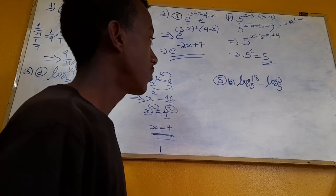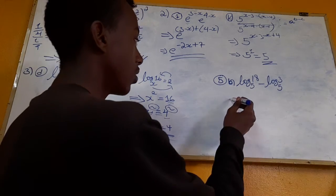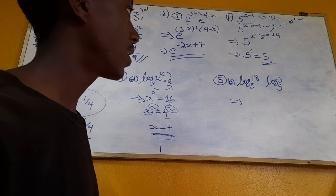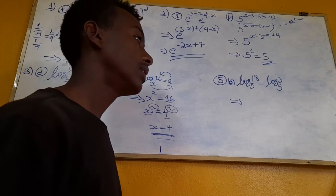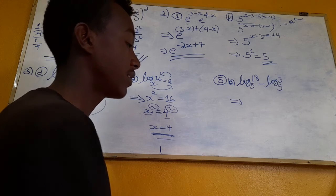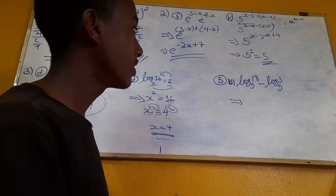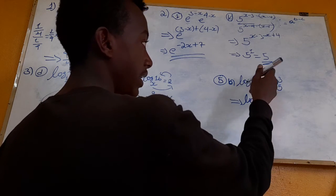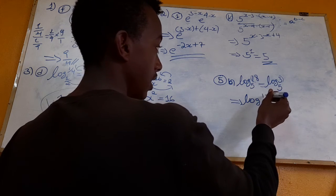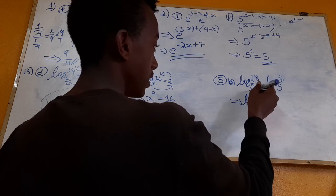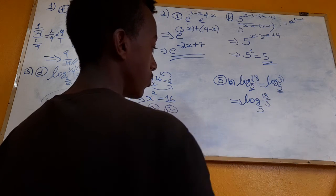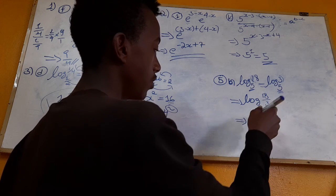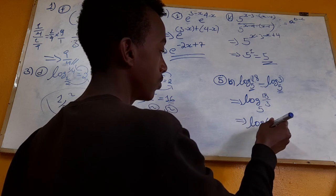Log 16 to the base 5 minus log 3 to the base 5. Division becomes subtraction, multiplication becomes addition. So log 18 to the base 5 minus log 3 to the base 5. Using the subtraction rule for logarithms, we divide: 18 over 3. Both sides have the same base 5. So this equals log of 18 over 3, to the base 5, which is log 6 to the base 5.